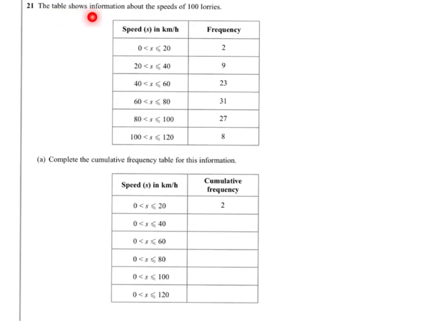So, the table shows information about the speeds of 100 lorries. They've been categorized into six different intervals. We've got eight lorries, for example, traveling between 100 km per hour and 120, up to and including 120, two between 0 and 20, nine between 20 and up and including 40 and so on.